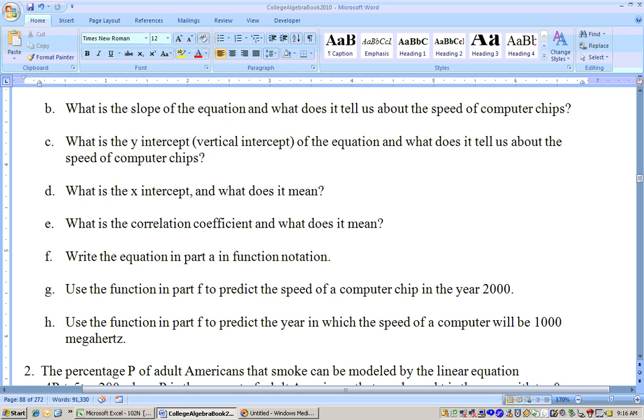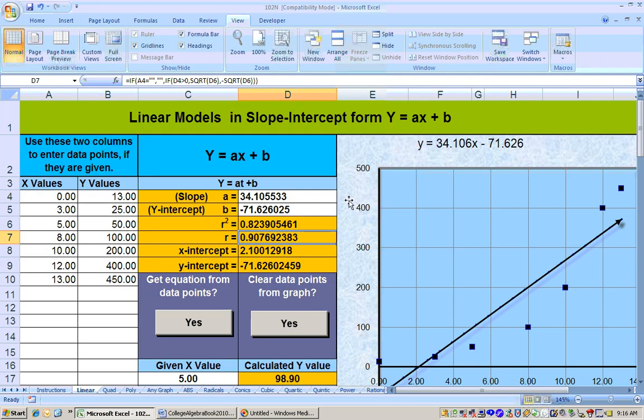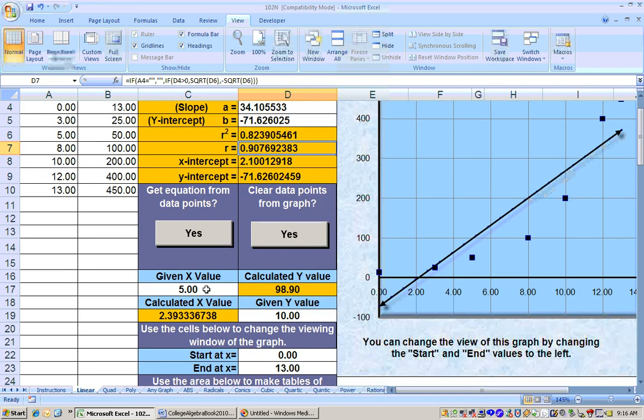Write it in function notation, and if we wrote it in function notation, we'd just say f of x equals this, or if t was the variable here, we'd say f of t equals this.